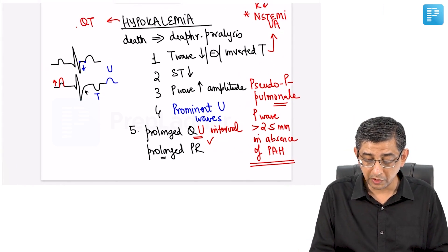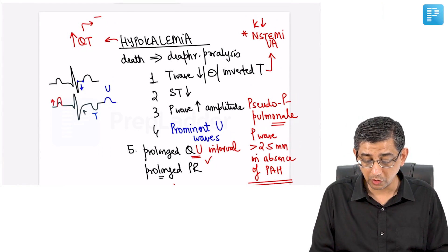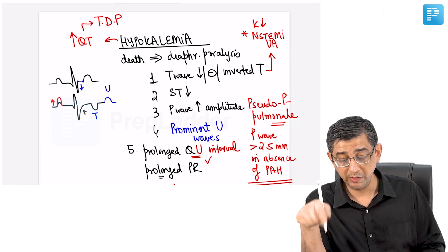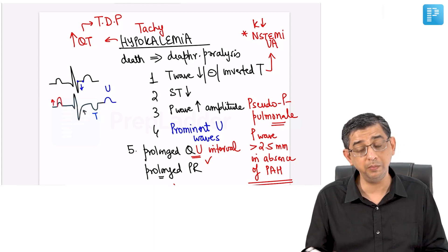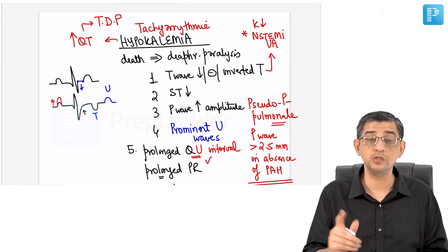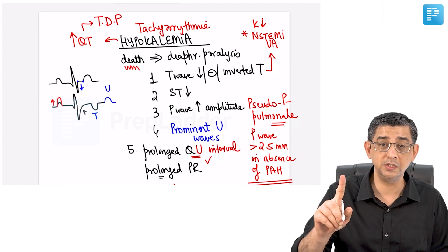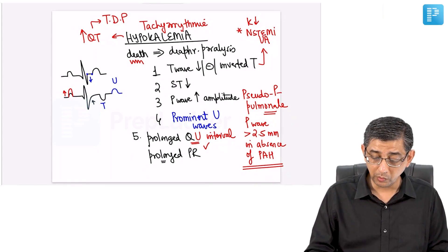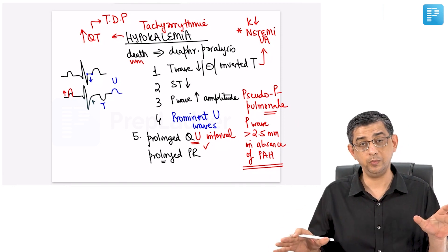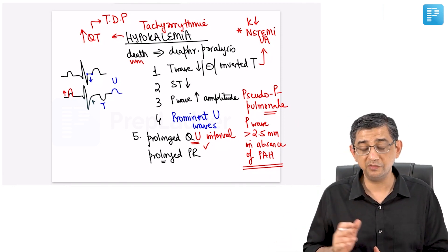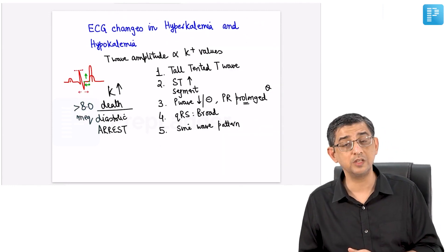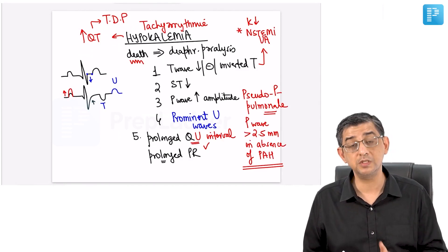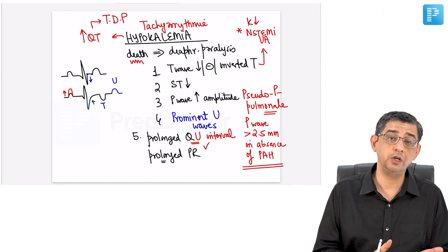With QT prolongation in hypokalemia, the associated tachyarrhythmia is Torsades de Pointes. In hyperkalemia, the arrhythmia is ventricular fibrillation. However, if asked what is the leading cause of death in hypokalemia, do not answer Torsades de Pointes — the answer is diaphragmatic paralysis. Remember: examiners often deliberately ask about hypokalemia ECG findings since many students focus only on the characteristic hyperkalemia findings like sine wave pattern.